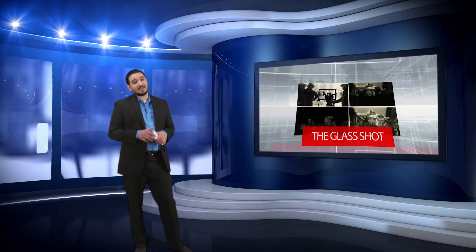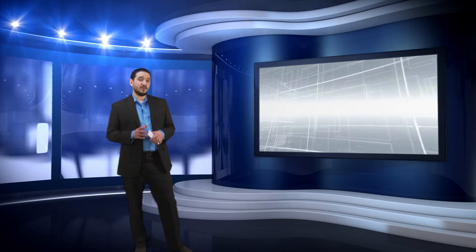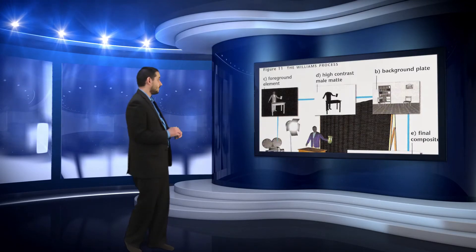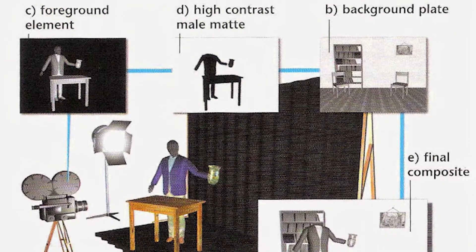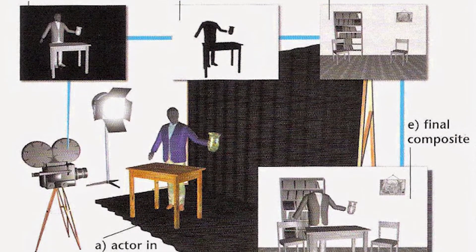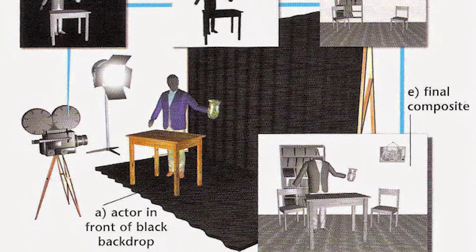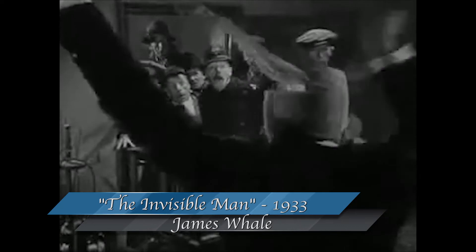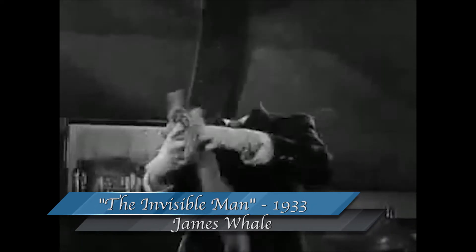The one downfall to the in-camera matte technique and the glass shot was that the camera had to be stationary. Filmmakers began looking for a solution to this, and in 1918 Frank Williams developed the traveling matte, known as the Williams process. Examples can be seen in films such as Sunrise in 1927 and 1933's The Invisible Man.